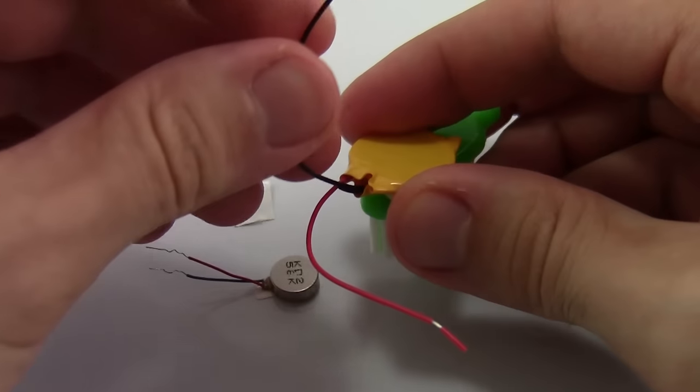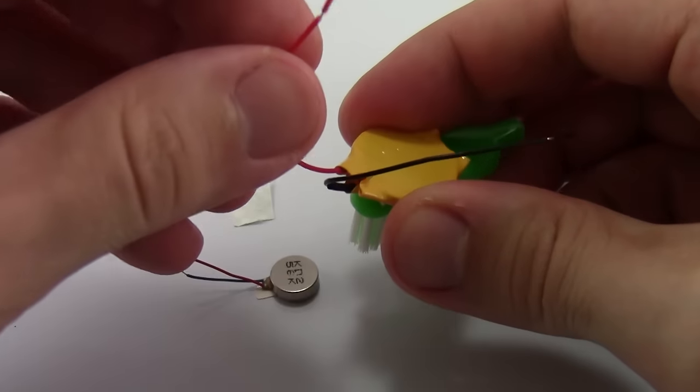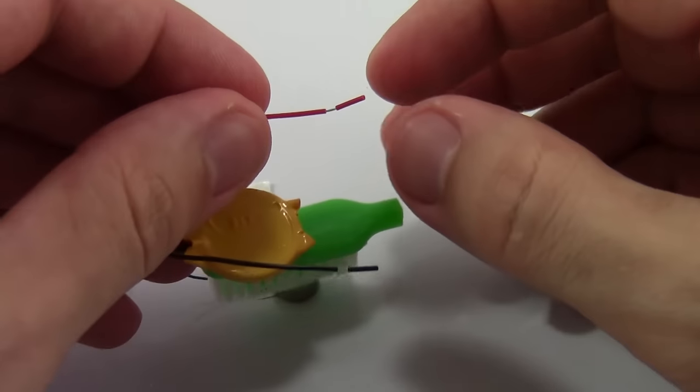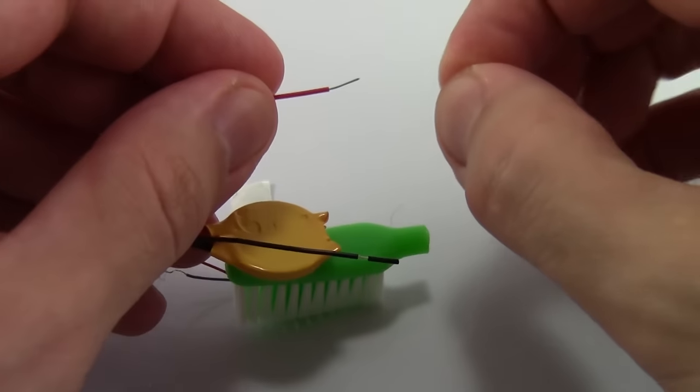Bend the two wires on the battery back, kind of like antenna on a little bug. Then, pluck off the two small pieces of insulation on the end of each wire.